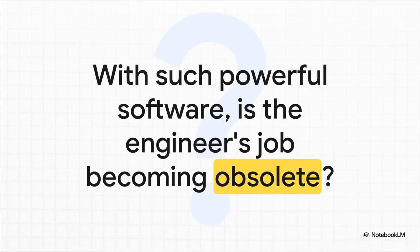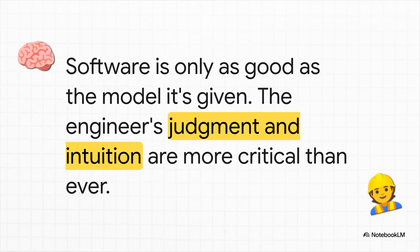Which, of course, leads us to a really important final question. With software this powerful, software that can solve these mind-bogglingly complex problems in the blink of an eye, is the job of the human engineer becoming obsolete? The answer is, no way. Absolutely not. And here's why. The software is only as good as the model you give it. Think back to that Dallas Cowboys facility. That wasn't a computer error. That was a human error. A mistake in the inputs. The computer is brilliant at crunching the numbers. But it takes an engineer's creativity, their judgment, their gut intuition, to build the right model in the first place. They have to ask the right questions and, most importantly, know when the computer's answer just doesn't feel right for the real world. So yeah, technology is an amazing, powerful tool. But it's still human ingenuity that keeps our world standing.